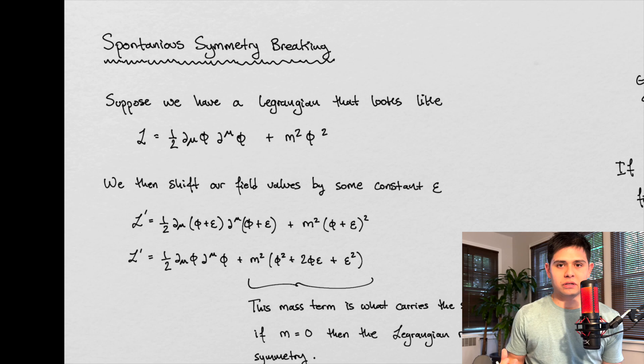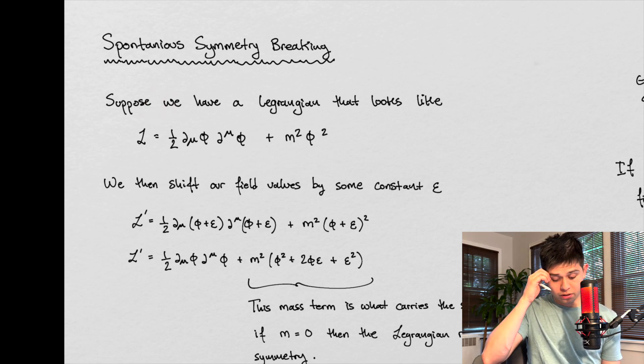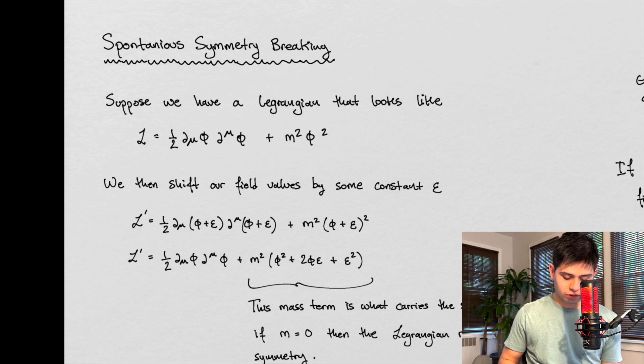Again, we're talking about spontaneous symmetry breaking. Again, we're getting close to the end of the book. But let's get right into this. So let's suppose we have the following Lagrangian. This is your standard scalar Lagrangian. Nothing fancy here. And this is what it looks like.